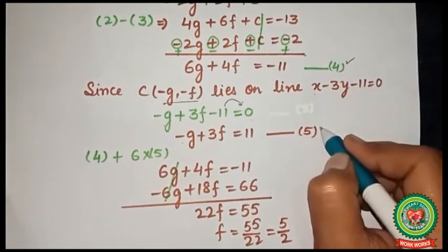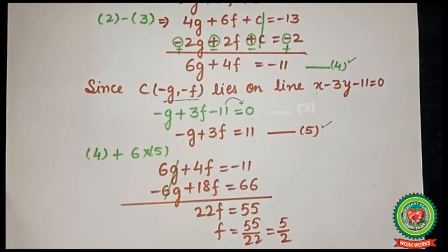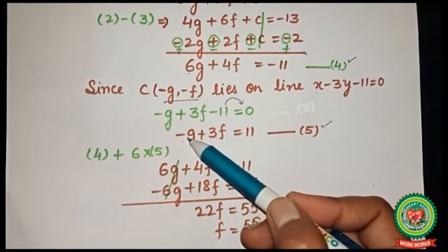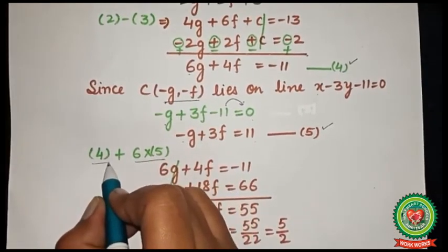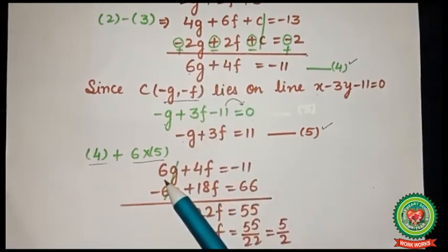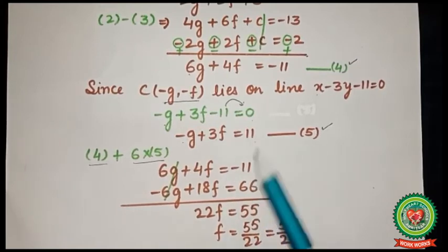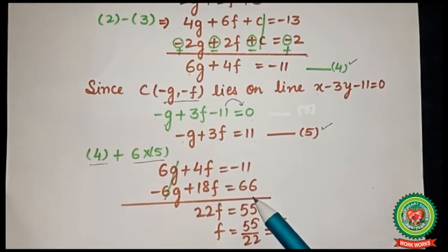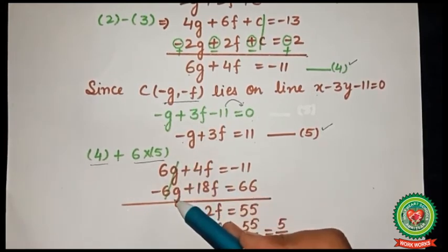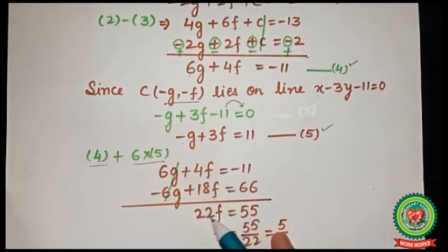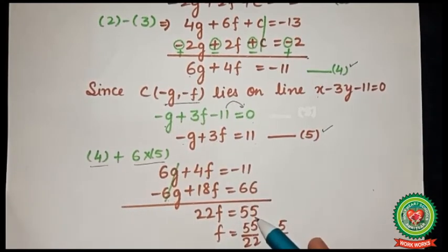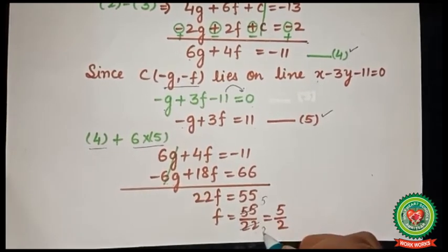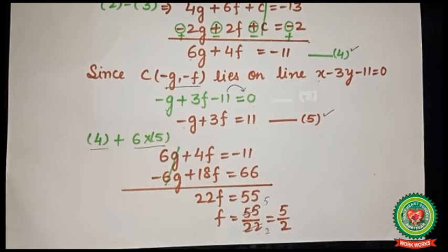To solve equations 4 and 5, multiply equation 5 by 6 and add to equation 4. Equation 4 is 6g + 4f = -11; equation 5 multiplied by 6 gives -6g + 18f = 66. Adding, 6g cancels, leaving 22f = 55, so f = 55/22 = 5/2.